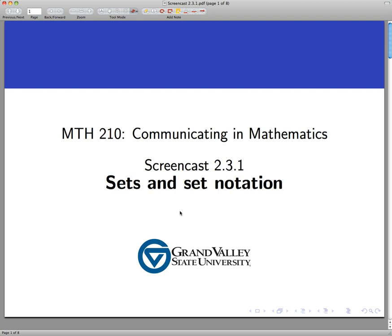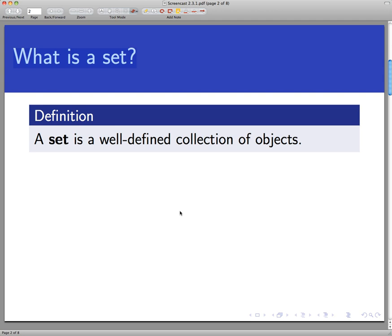So let's start off with a definition. We're going to keep a pretty loose definition of what a set is because it turns out to be fairly hard to give a rigorous definition of what a set is in mathematics. So we're just going to say a set is a well-defined collection of objects.